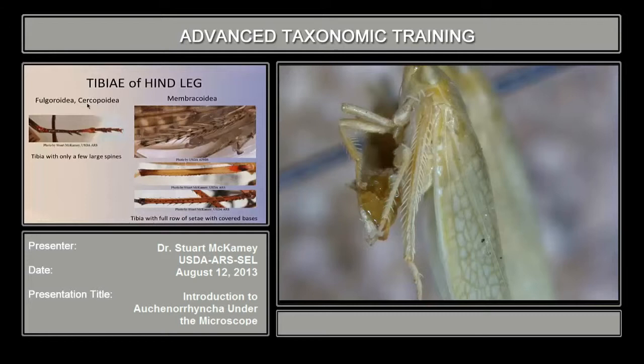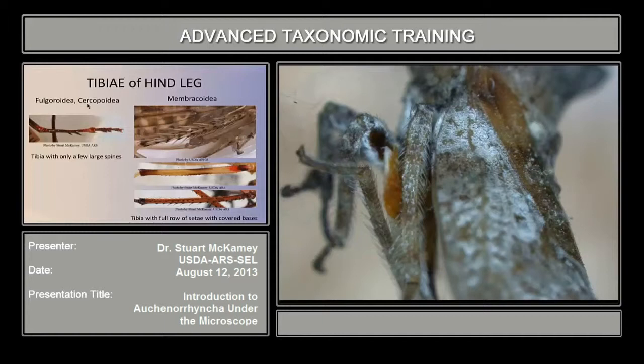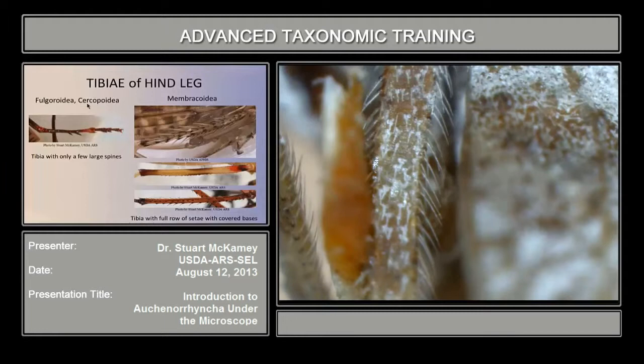This is the treehopper. Although the spines are smaller than in most leafhoppers, they still have setae with covered bases, as in leafhoppers. Here's the hind tibia — zooming up on that — these black-based setae are homologous to the basally covered setae in the leafhoppers. So these are the two families of Membracoidea: the leafhoppers and treehoppers.